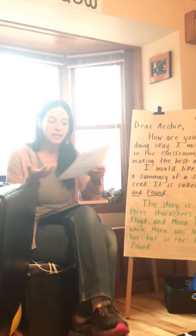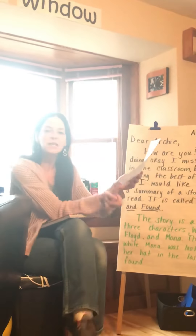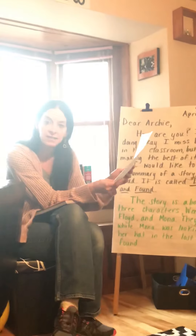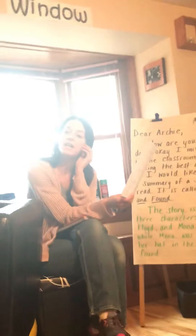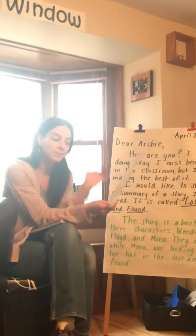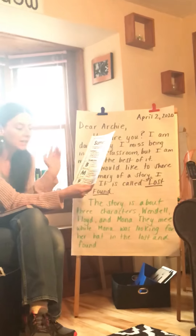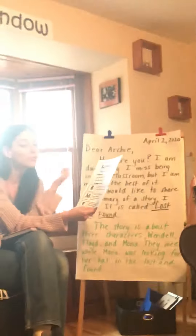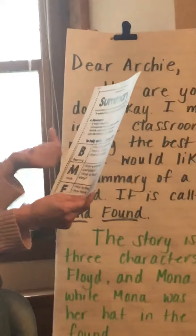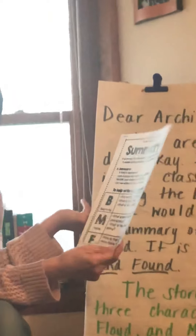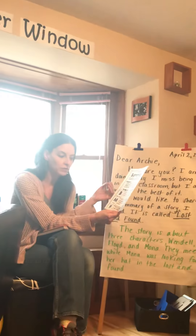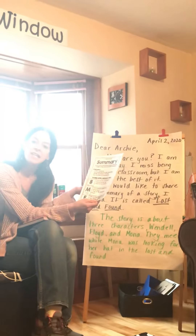I'll start by just telling you what a summary is. A summary is a shortened version of a story. It has a beginning, a middle, and an end. In the beginning you usually talk about the characters and the setting. In the middle of a summary you usually talk about what happens and if there's a problem. In the end you talk about how the problem was solved.